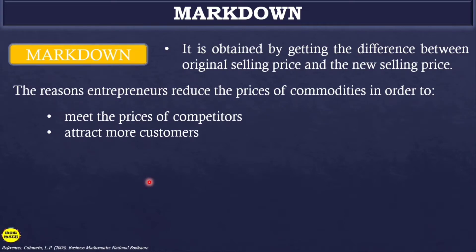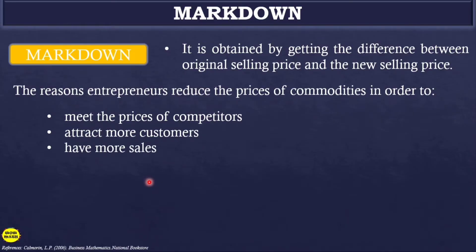Buyers, before purchasing something, don't just stay in one store — they go around asking who offers the cheapest price, and that's where they buy. For appliances, for example, customers ask around who offers the lower price for the same brand and same quality. Another reason is to have more sales — like what SM does, they have sales from the regular price, like 3-day sales especially near Christmas or the school season.